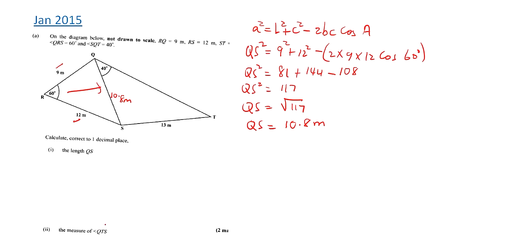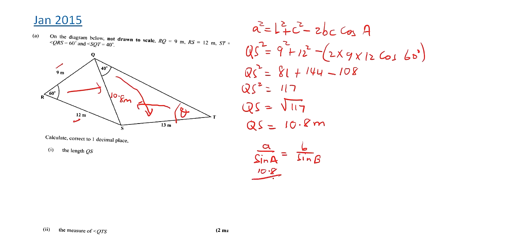Now we want to calculate angle QTS, which is theta. We have an angle we want to find, we know the side opposite it, and we have another angle and its opposite side, so we use the sine rule: a/sinA = b/sinB. We set up: 10.8/sin(θ) = 13/sin40°.